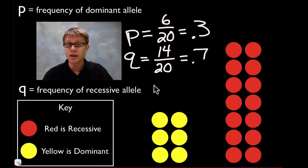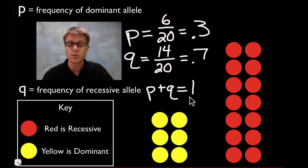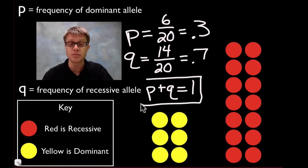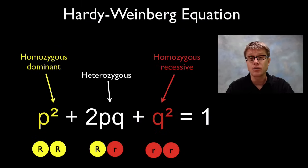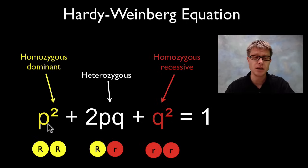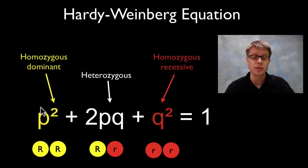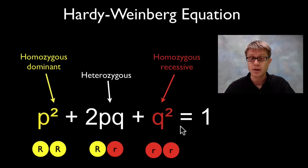What you should notice right away — this is very important — is that P plus Q will always equal 1. In other words, 0.3 plus 0.7 equals 1. In any problem you solve, P plus Q will always equal 1, and that allows you to solve some tough problems. Now let's get to the Hardy-Weinberg equation: P² + 2PQ + Q² = 1.